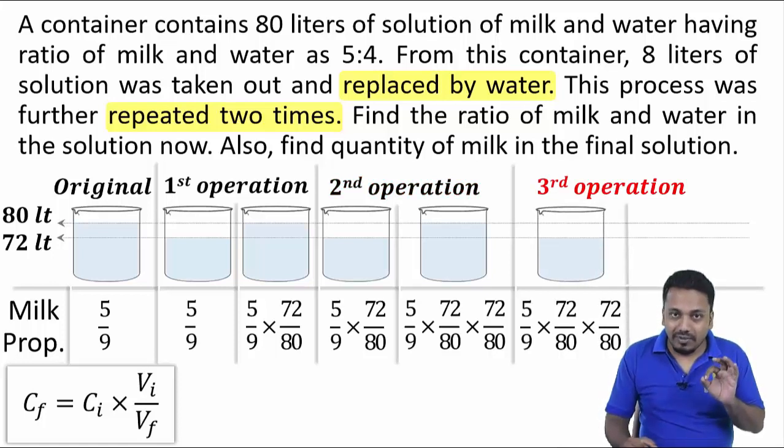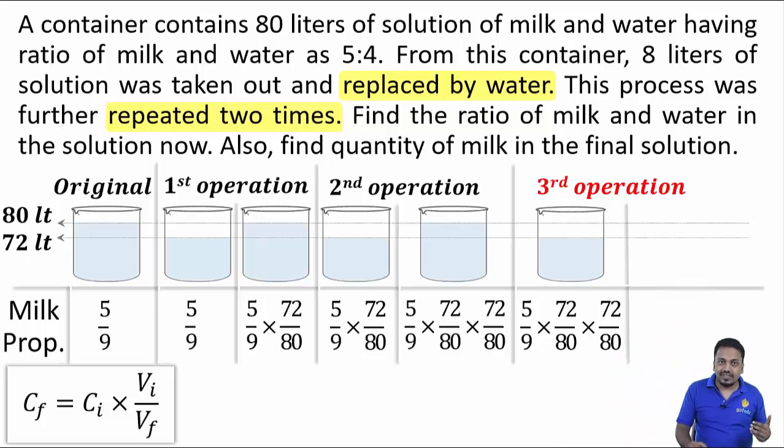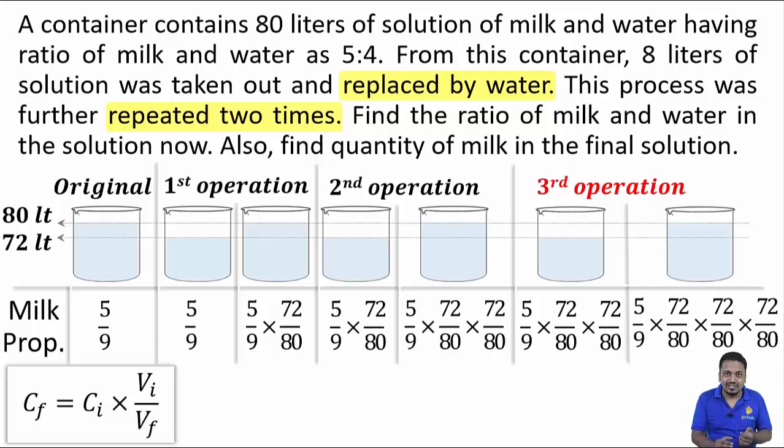It will remain unchanged on removal, on replacement, one more 72/80 will get multiplied.